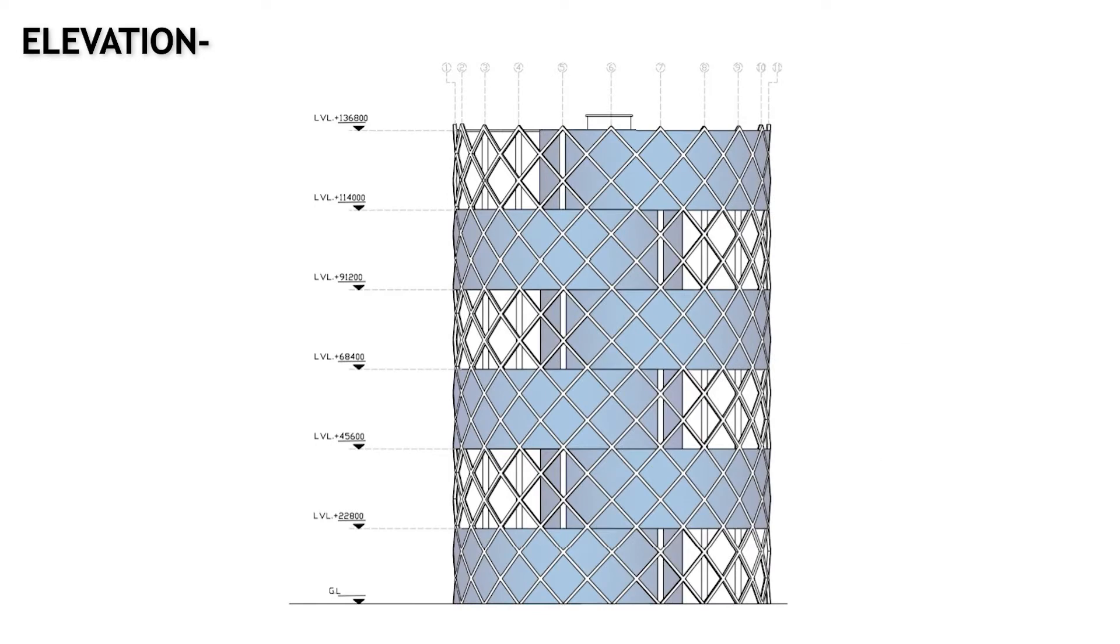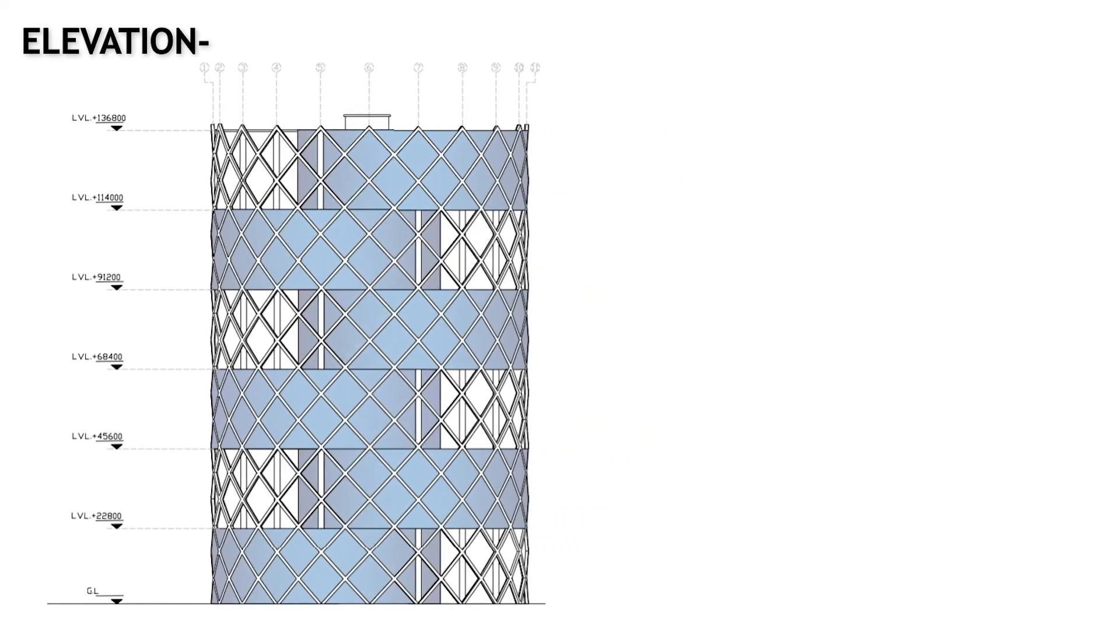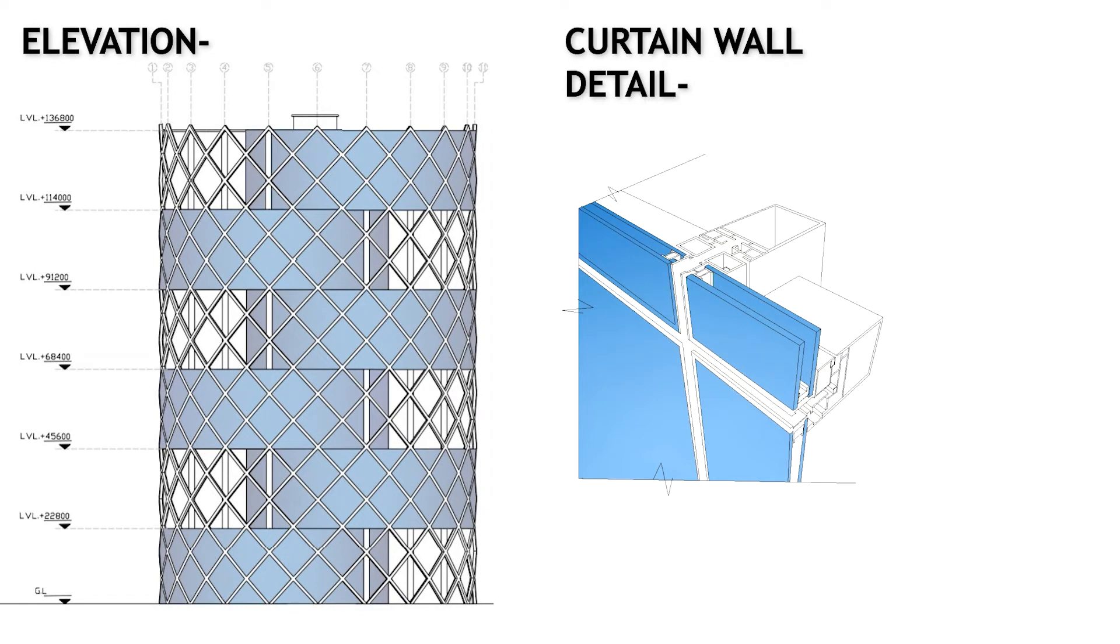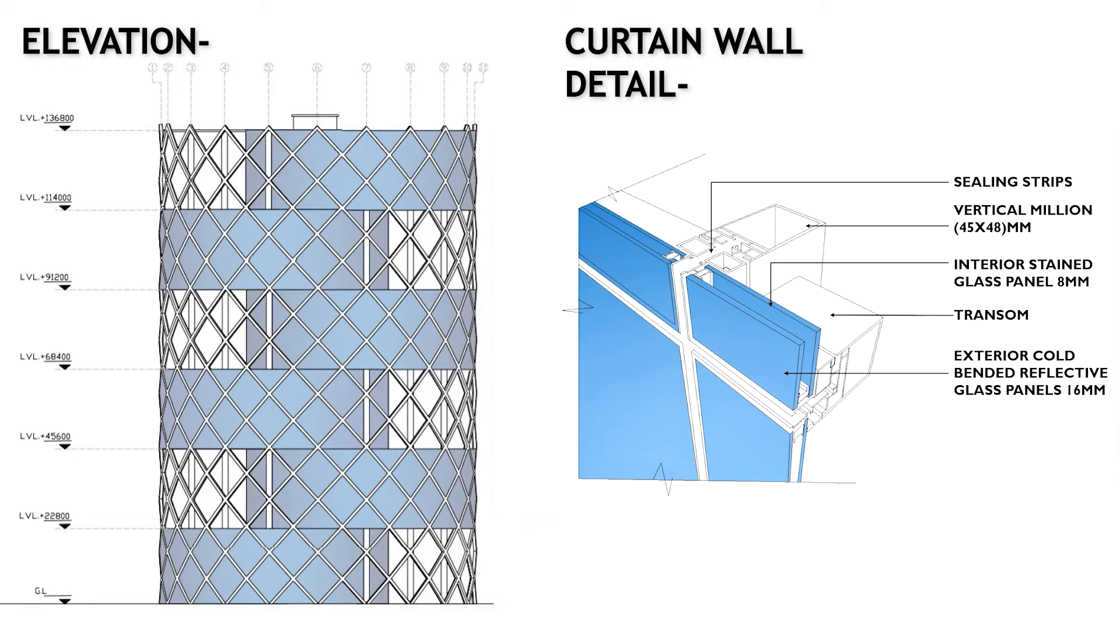In the elevation, the facade of the structure is provided with diagrid frame columns and curtain walls. The curtain walls with aluminum frame consist of vertical mullions and transoms holding both the glass panels with sealing strips, leaving 50 mm airspace. The interior stained glass panels of 8 mm and the exterior cold bending reflective glass panels of 16 mm are provided.